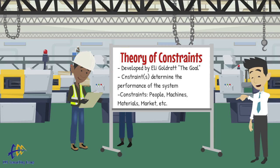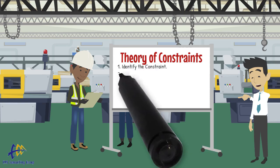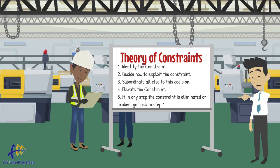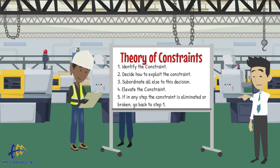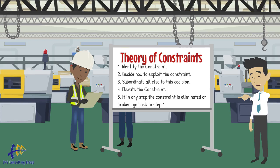Under Theory of Constraints, we take a simple approach to dealing with constraints. Number one, we identify the constraint. Number two, we decide how to exploit the constraint. Number three, we subordinate all else to this decision. Number four, we elevate the constraint. Number five, if in any step the constraint is broken or eliminated, we go back to step one.